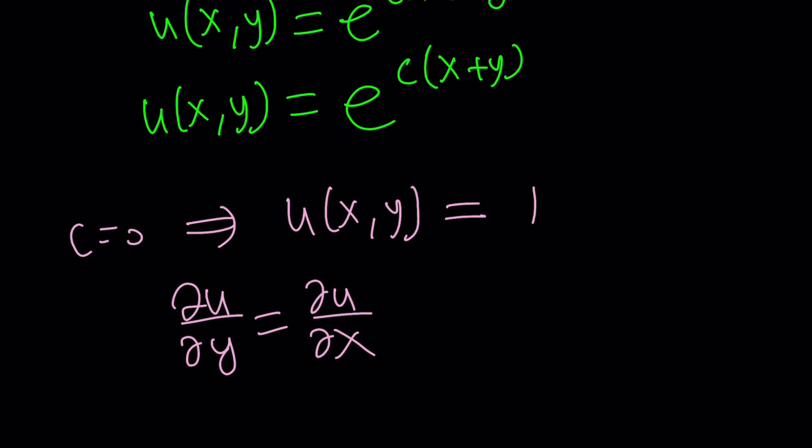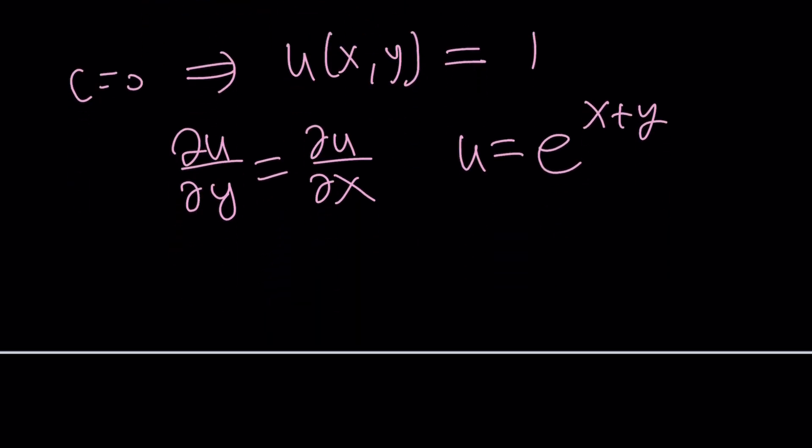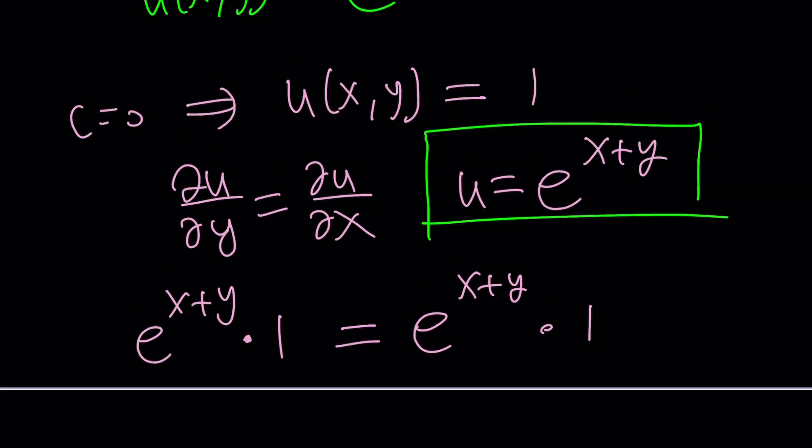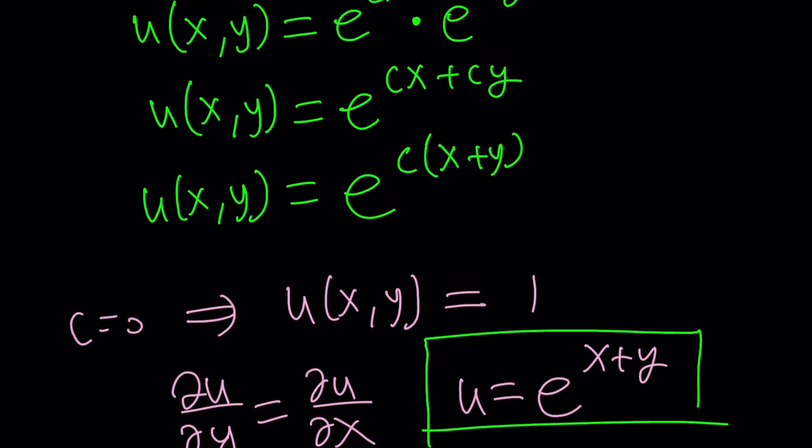What about e to the power x plus y? Yes, it does work as well, because if you differentiate e to the power x plus y with respect to y, you're going to write the same thing, multiply by the derivative of inside, which is the derivative of x plus y with respect to y, it's just going to be 1 plus 0, which is 1. And then on the other hand, you're going to get e to the power y plus x times 1, same idea. So they're going to be cool. This is indeed a solution, but it's only one of the solutions up to a constant. So this is like a more general solution.